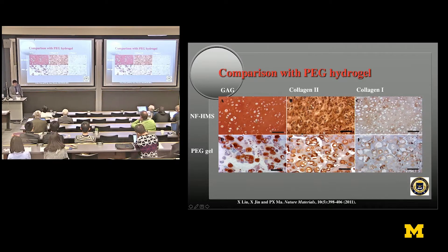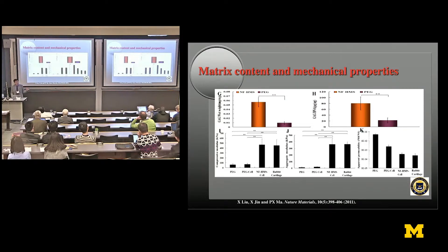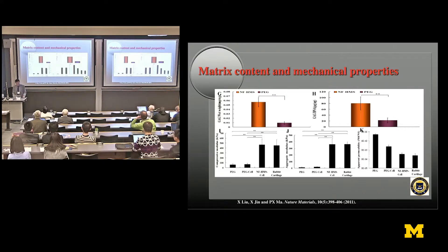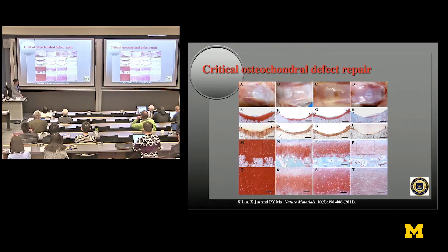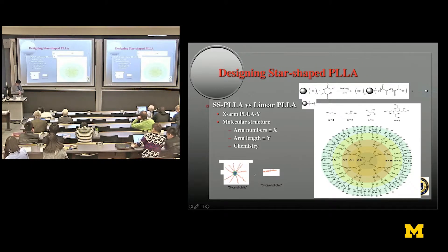We put these into animal models and repaired cartilage. We can see complete cartilage repair over time, with very strong staining. Compared to gels that other people use, our approach was much better. The mechanical properties now reach exactly the same as rabbit cartilage. This gets us closer to clinical application — because as I told you, 40% mechanical properties was thought too good to be true, and now it's totally matching. The repaired cartilage in rabbits shows very smooth surfaces and thick, high-quality cartilage.